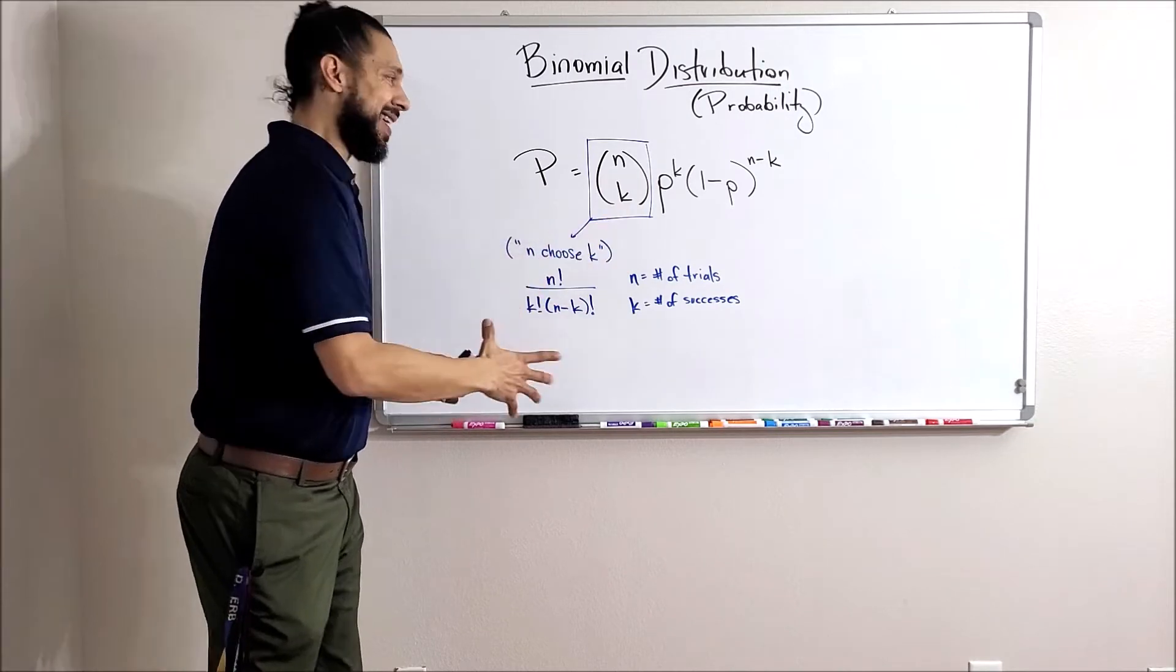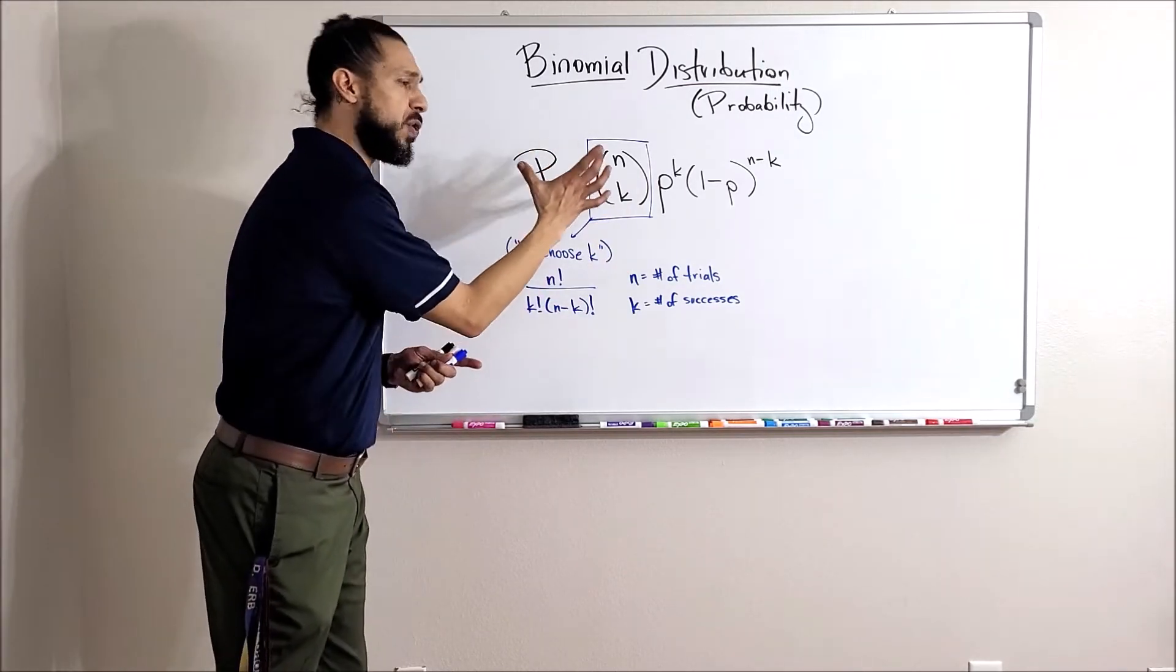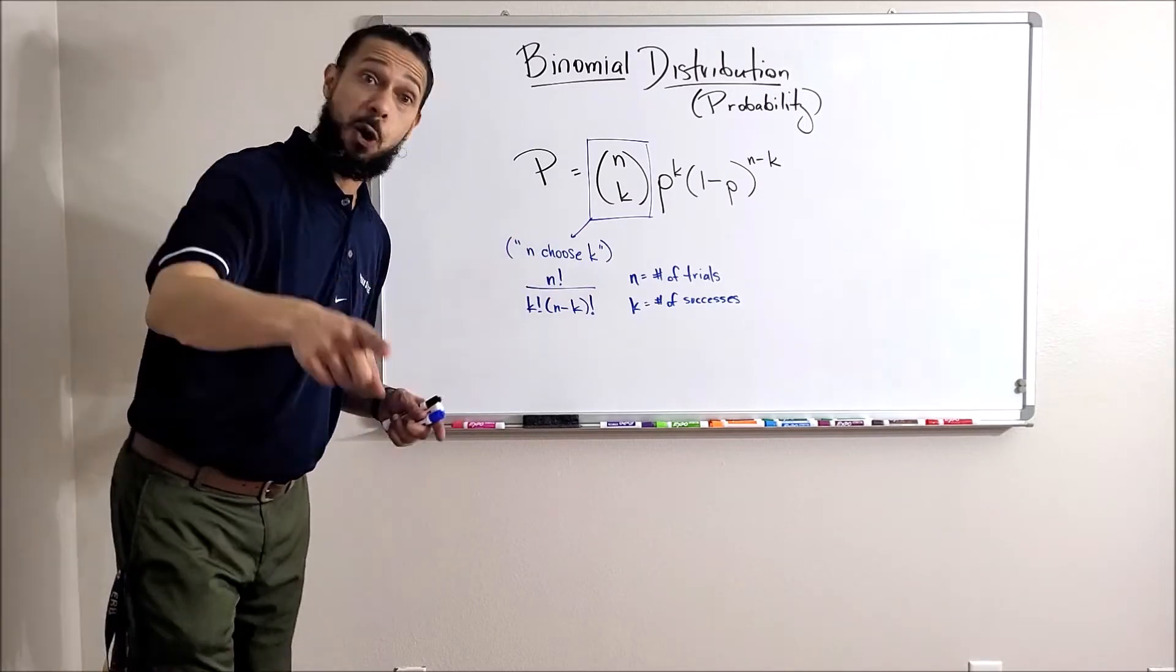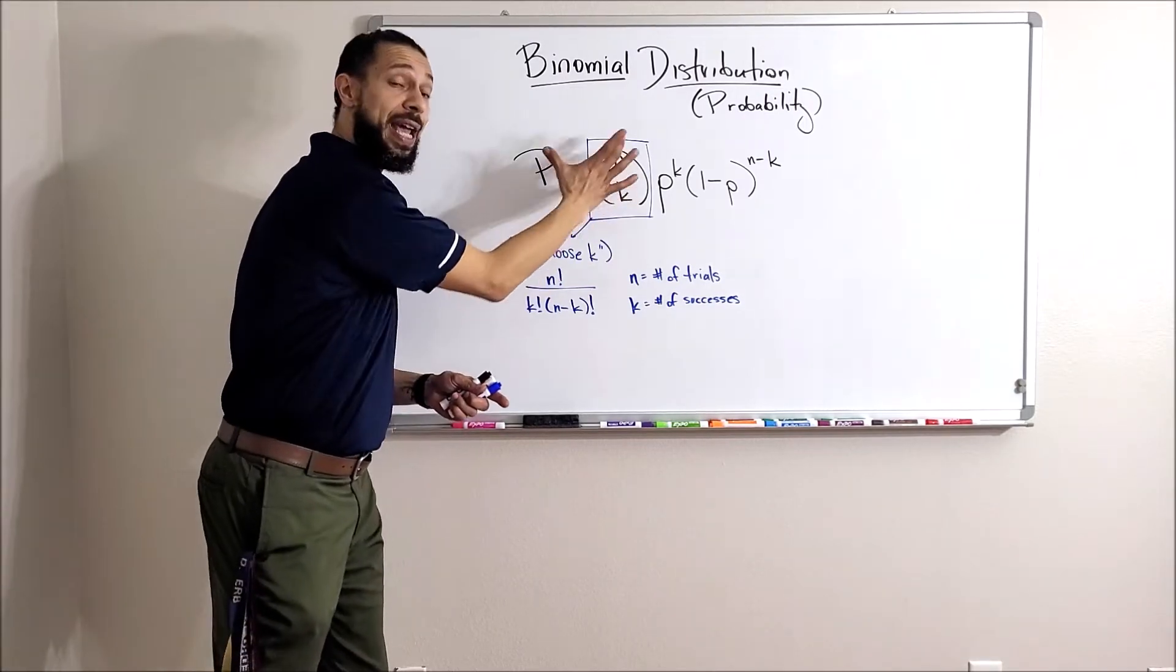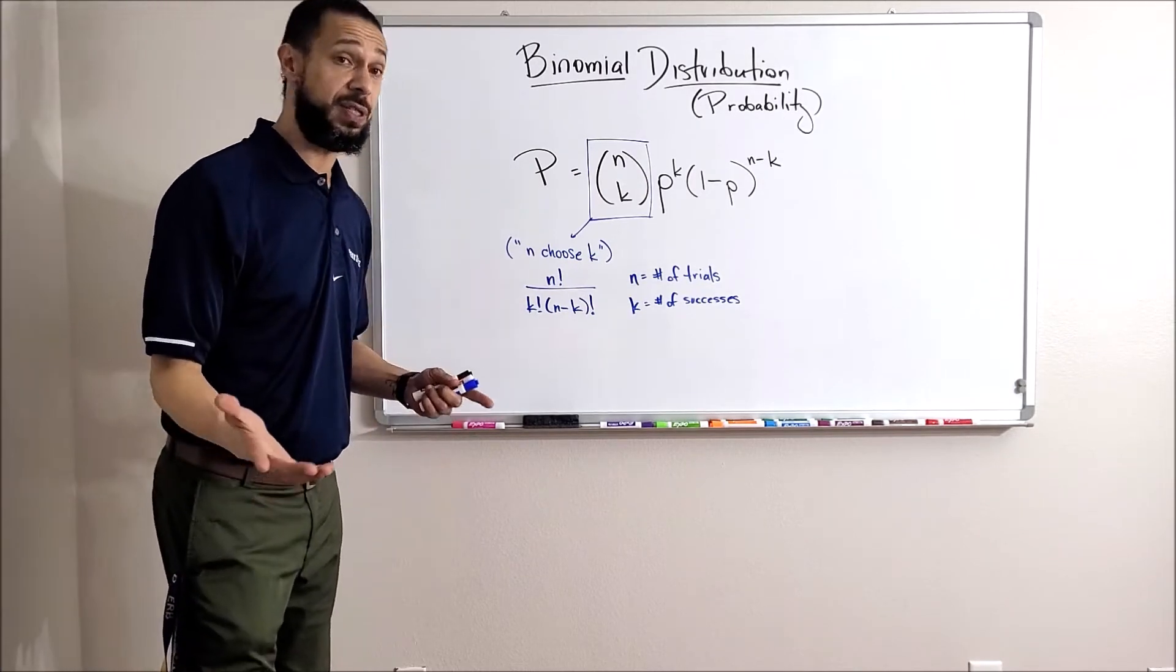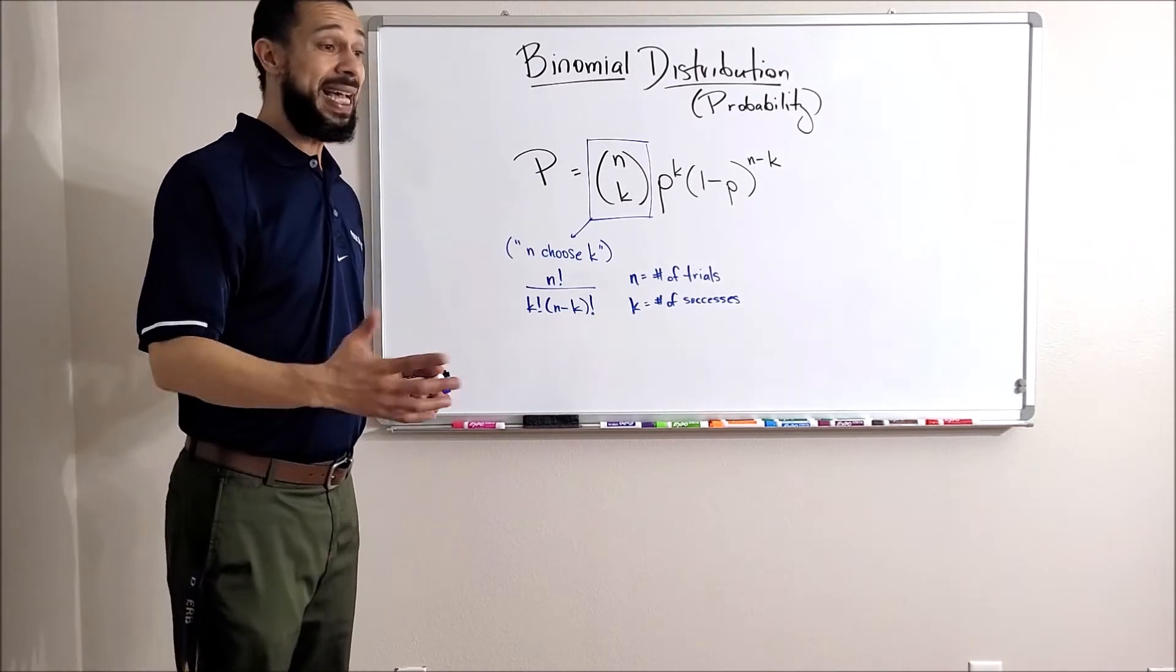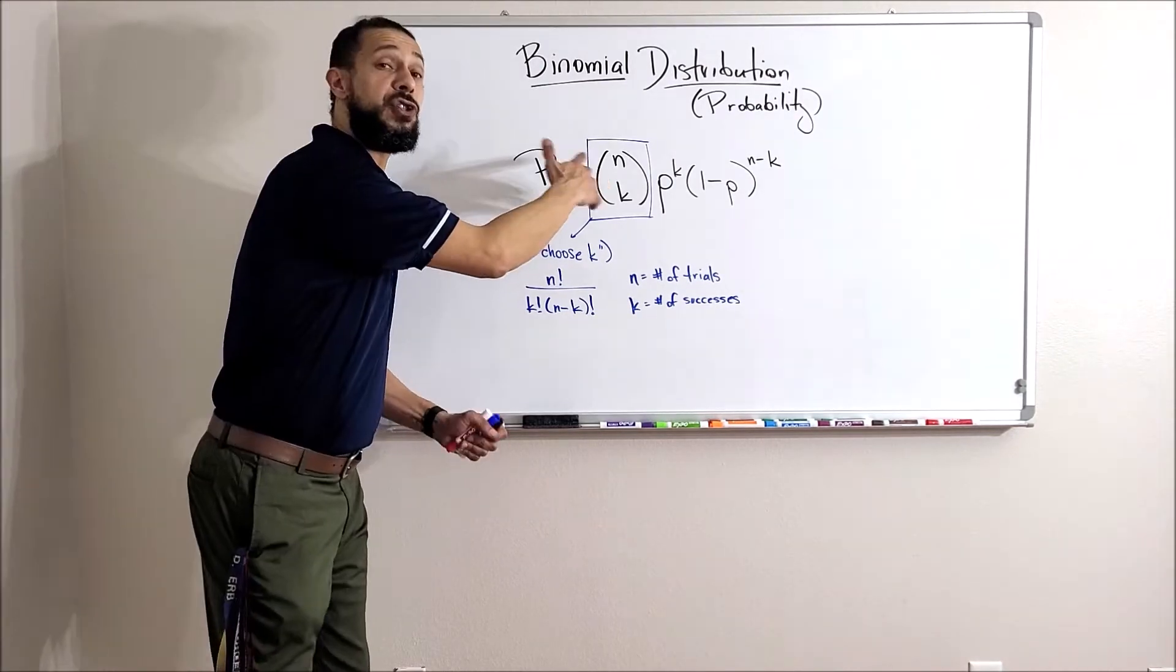The first part of this formula is a relatively advanced math term—hopefully you've seen this before. It's called 'n choose k.' It's used a lot in combinations and permutations.